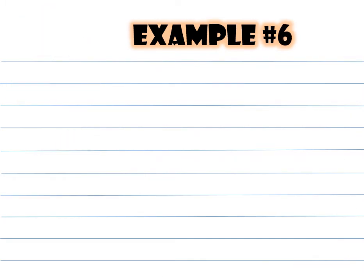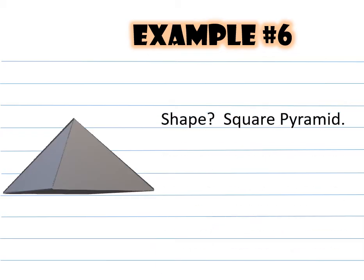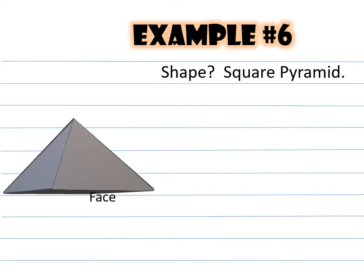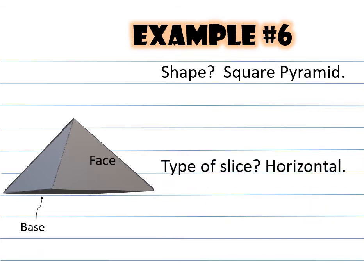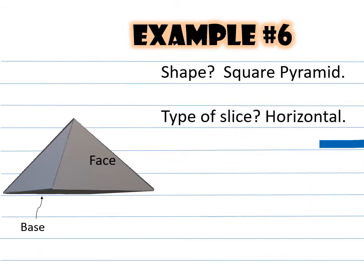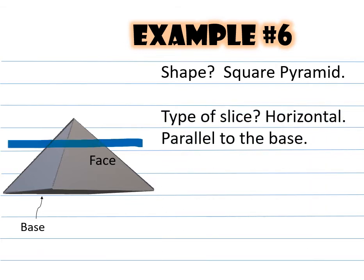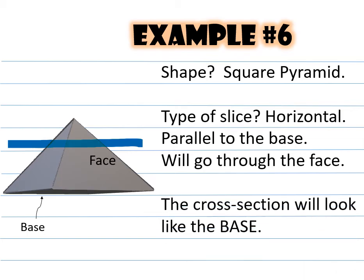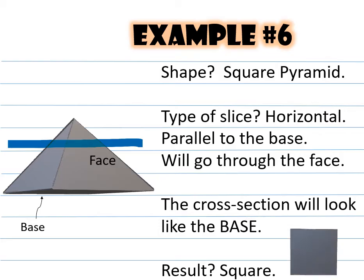Example number six: we still have a square pyramid with a face and a square base. The type of slice is horizontal, which is parallel to the base and will go through the face. The cross section will look like the base. The result is going to be a square.